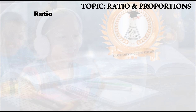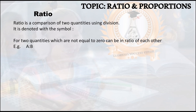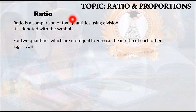What do we mean by ratio? In simple terms, ratio is a comparison of two or more quantities using division. Basically, we can compare two things or even three things with ratio.